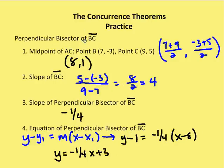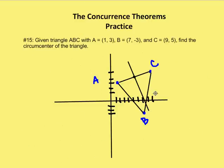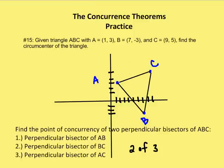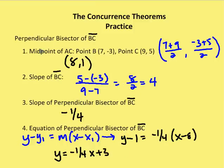Now let's get the second perpendicular bisector of BC. We're finding the midpoint of BC first, then the slope of BC, then the slope of the perpendicular bisector of BC. The midpoint of BC is the average of the two x and y values for B and C: (7 + 9)/2 for x gives us 8, and (-3 + 5)/2 gives us 1. So the midpoint of BC is (8, 1).